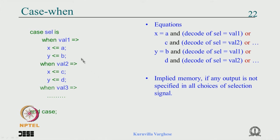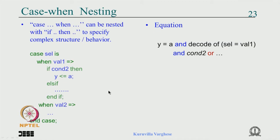We have seen an example where value1 and value2 have a and b specified, giving the equation x = a AND decode(value1) OR c AND decode(value2) and so on. If you fail to specify x for a particular value, that results in an implied latch — there will be feedback. So you need to be careful, same as with if — you could mix case with if in a complex structure.